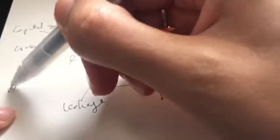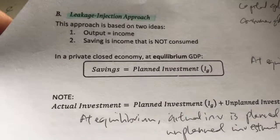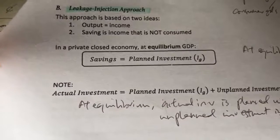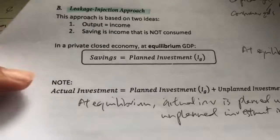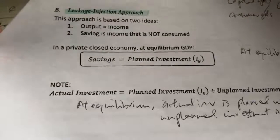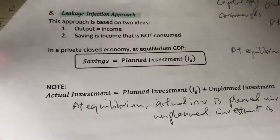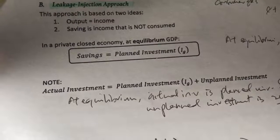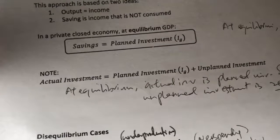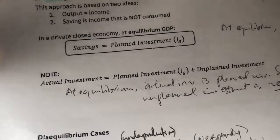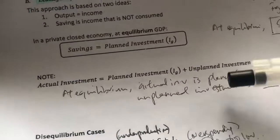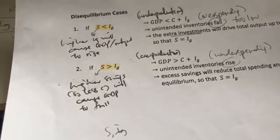So this is basically the situation at equilibrium. In a private closed economy, at equilibrium GDP, savings equals planned investment. An important note: planned investment is not actual investment. Actual investment equals planned investment plus unplanned investment. At equilibrium, actual investment equals planned investment — meaning unplanned investment is zero. To understand this better, we need to look at what happens in disequilibrium cases.